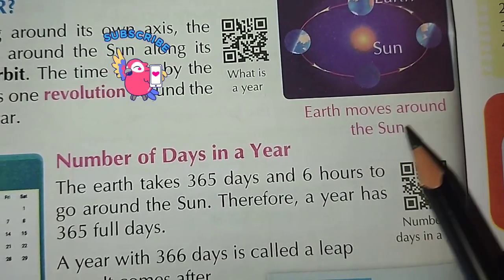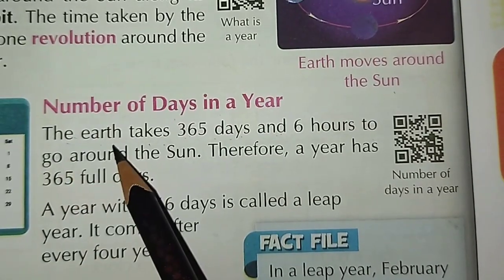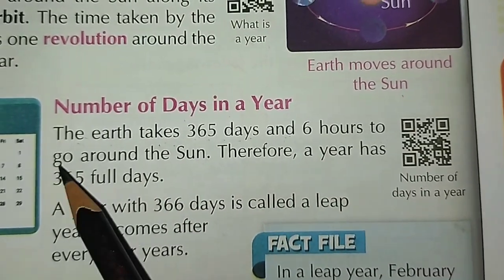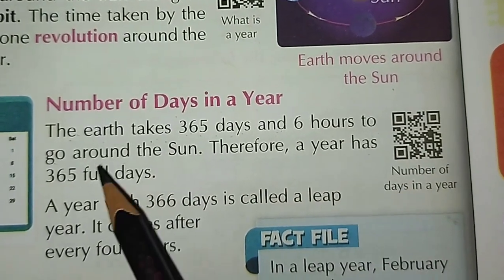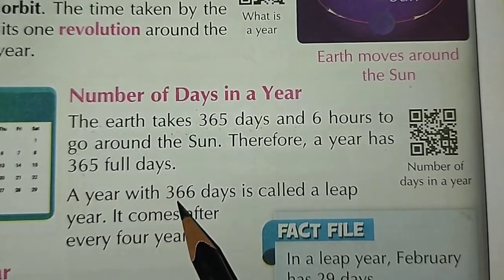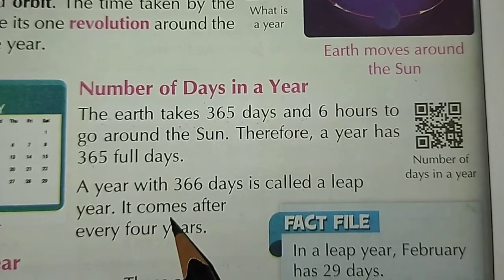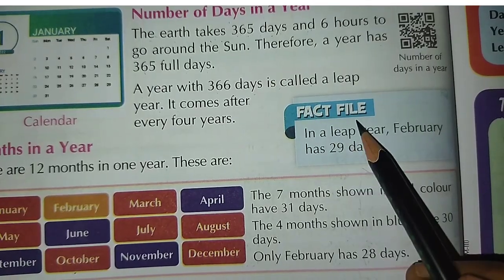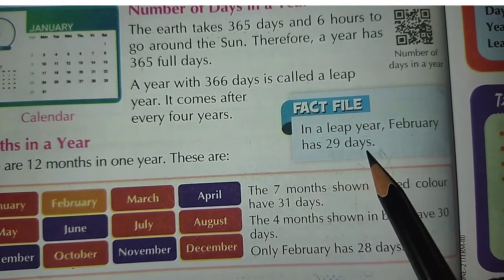Earth moves around the Sun. The Earth takes 365 days and 6 hours to go around the Sun. Therefore, a year has 365 full days. A year with 366 days is called a leap year. It comes after every 4 years. In a leap year, February has 29 days.